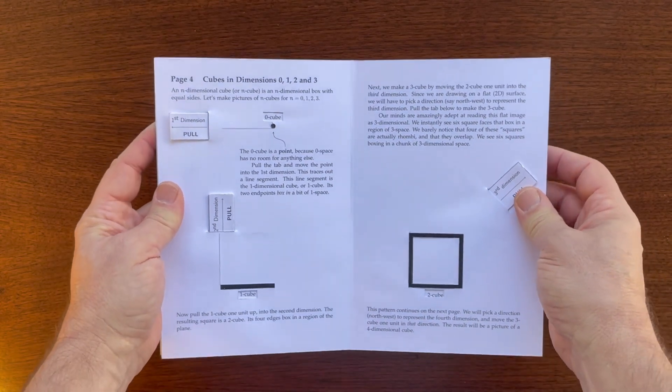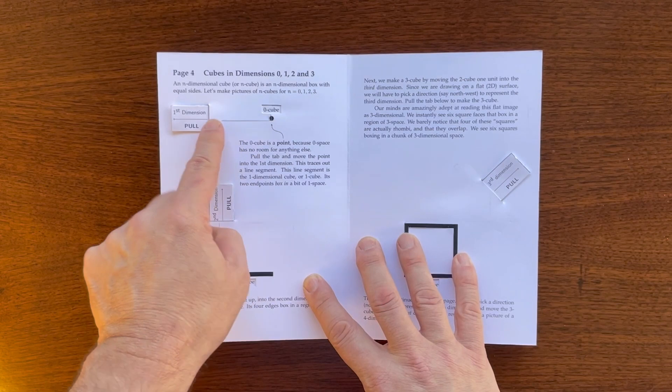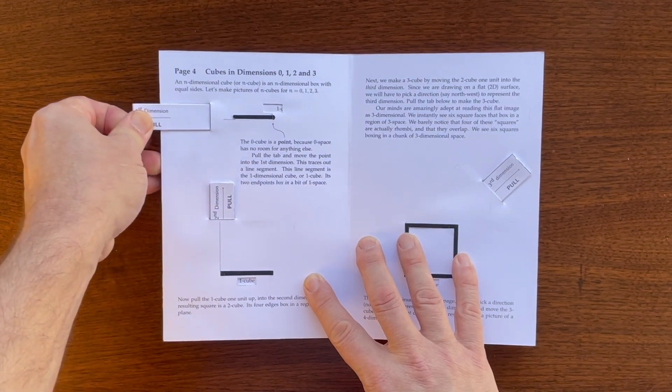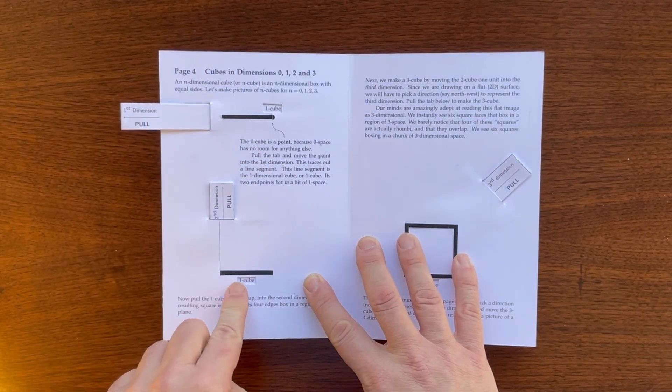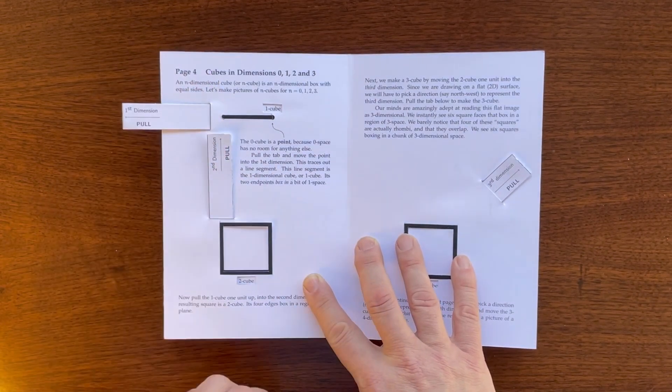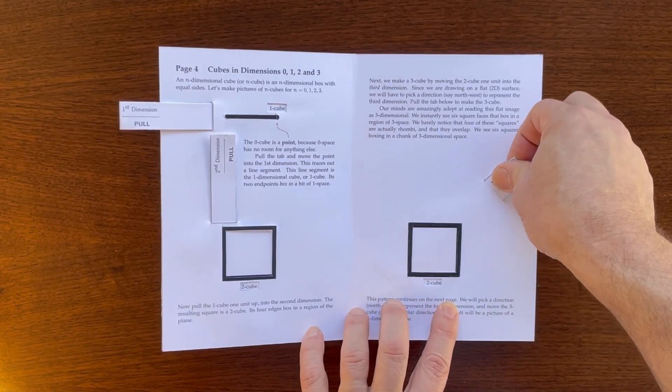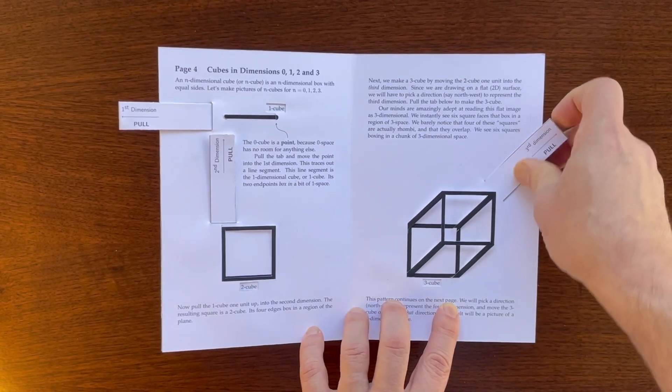Let's look at cubes in different dimensions. A zero-dimensional cube is a point. Pull it into the first dimension to get a one-dimensional cube, or line segment. Pull that into the second dimension to get a two-dimensional cube, or square. Pull it into the third dimension to get a three-dimensional cube.